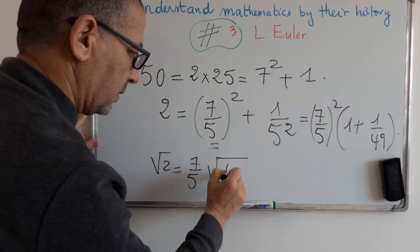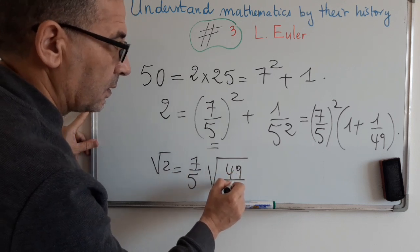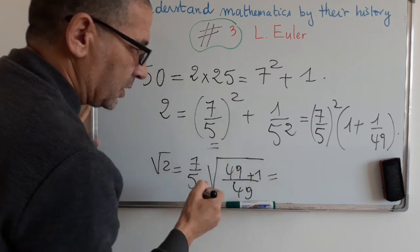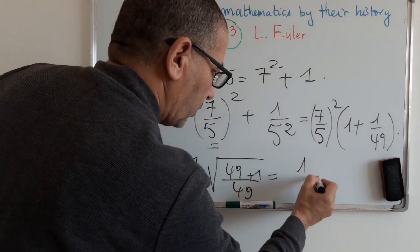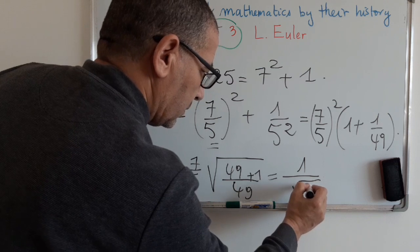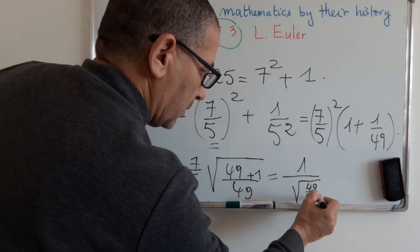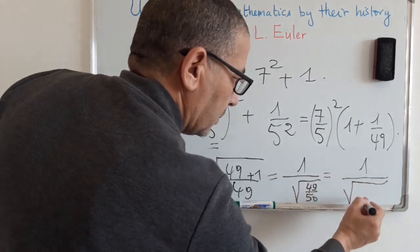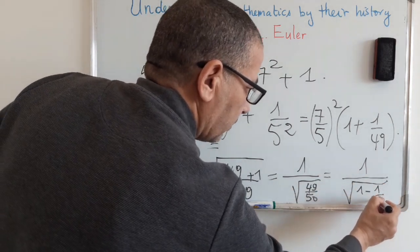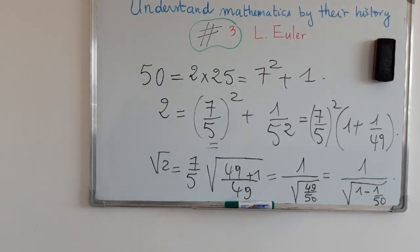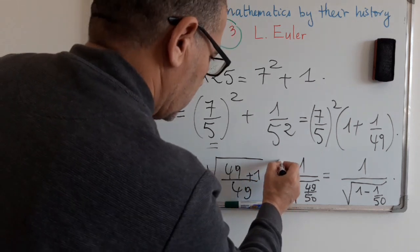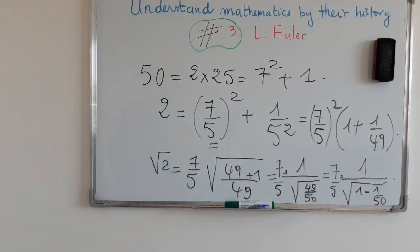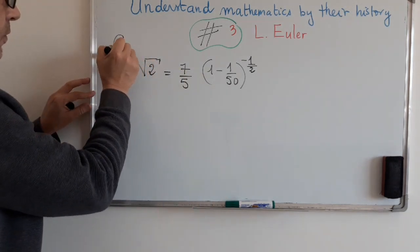And here, times square root of 1 plus 1 over 50, which might be written in the following form, 1 over square root of 1 minus 1 over 50, without forgetting this fraction. Now, from this expression...